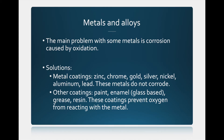Then we have metals and alloys. The main problem with metals is corrosion, caused by oxidation — the contact of oxygen with the metal causes it to rust. To protect metals, we can apply coatings made of zinc, chrome, gold, silver, nickel, aluminum, or lead, since these do not react with oxygen and don't corrode. By putting that type of metal on top of a metal that tends to rust, we protect it.